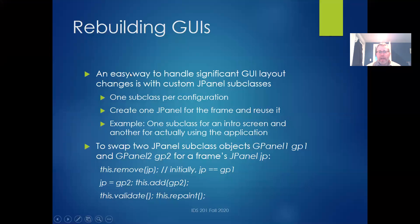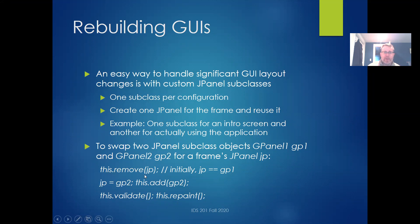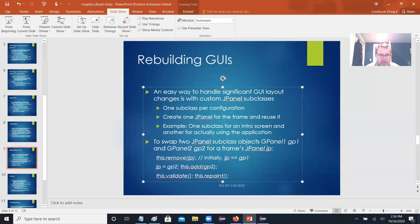One way to handle significant GUI changes is with custom JPanel subclasses. If you have two different configurations for your window, pre-build them both at the start when the application begins. When you need to switch between them, just swap them out: remove one panel with the remove method and add the other. Then call validate and repaint. This is much easier than trying to dynamically modify a single panel's component hierarchy.